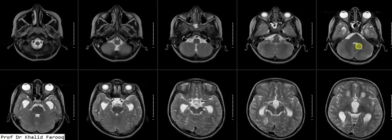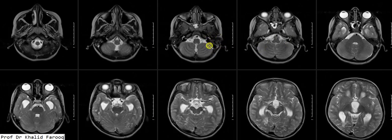Here we see the brainstem. The fourth ventricle size is normal. The cerebellum, vermis, CP angles, and seventh and eighth nerve complexes are unremarkable. We see mild inflammatory changes in the mastoid ear cells on both sides, especially on the left side.